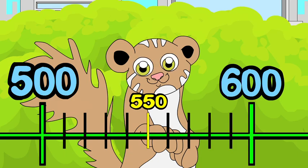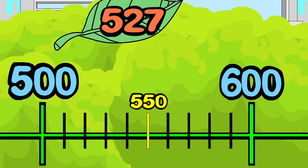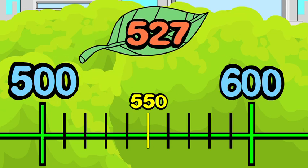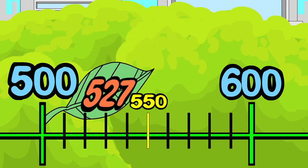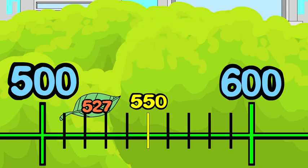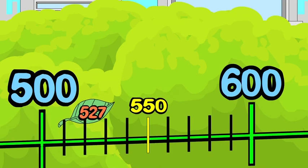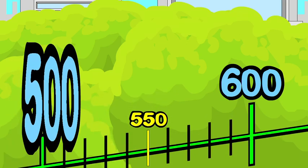Step 3: locate 527 on the number line. 527 is less than 550, so now you are ready for Step 4 — you can round. 527 is closer to 500 than to 600, so to the nearest hundred, 527 rounds down to 500.